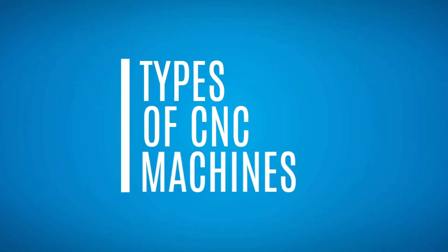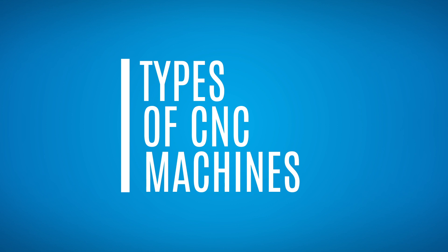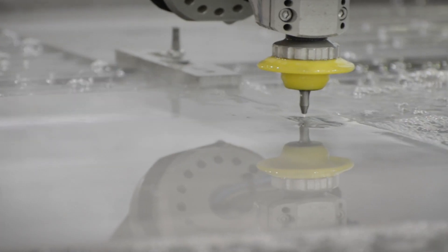There are several different types of CNC machines, including mills, lathes, plasma cutters, and waterjet cutters.